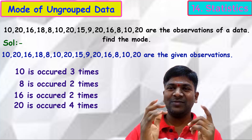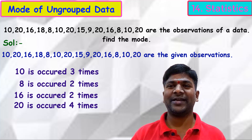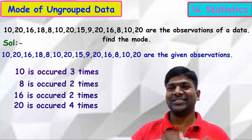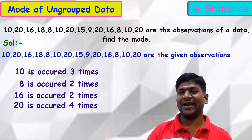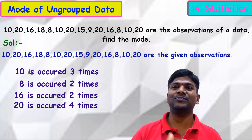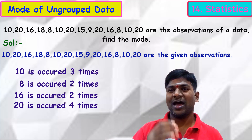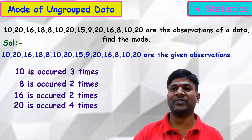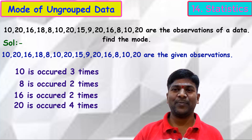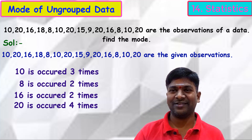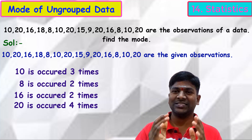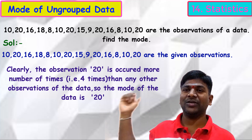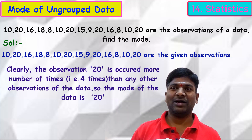By observation, we can conclude which is the mode. The observation 20 is repeated the highest number of times — four times — compared to all other observations. Therefore, mode = 20. This is the mode of the data.